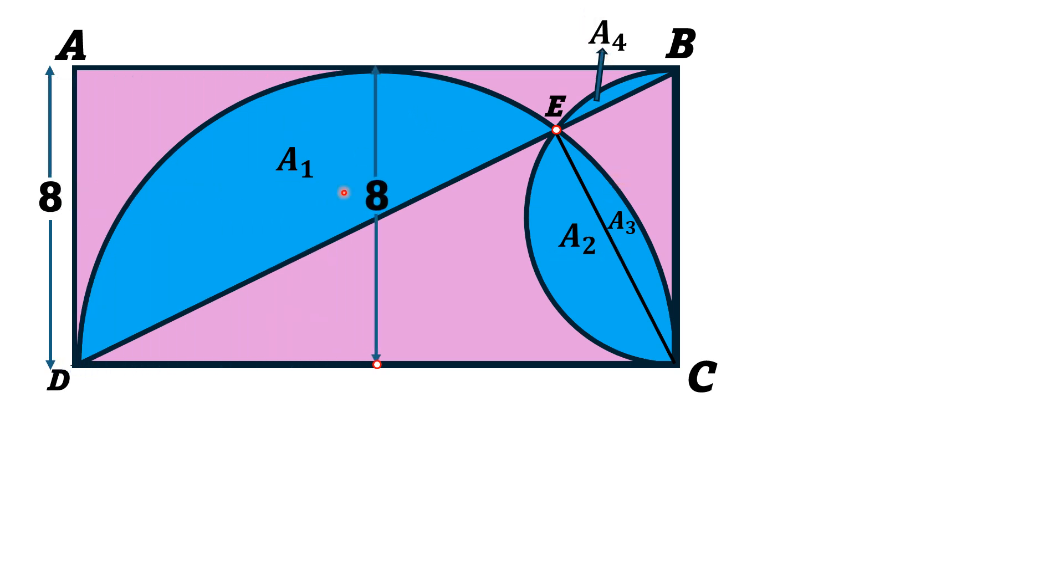Since the radius of this larger semicircle is 8 units, this length is 8 units and similarly this length is also 8 units, this whole length is 16 units.